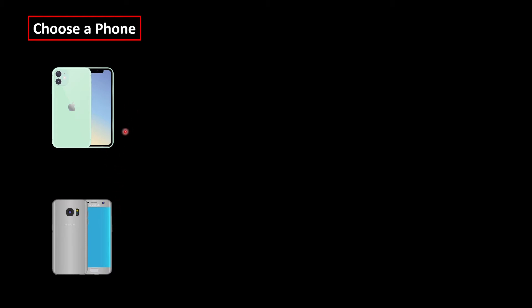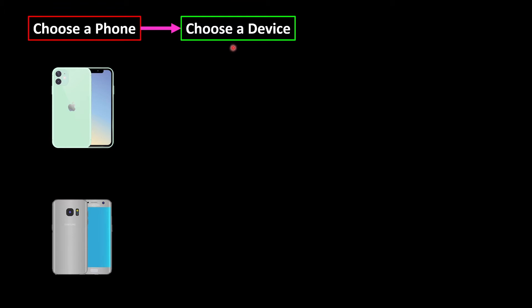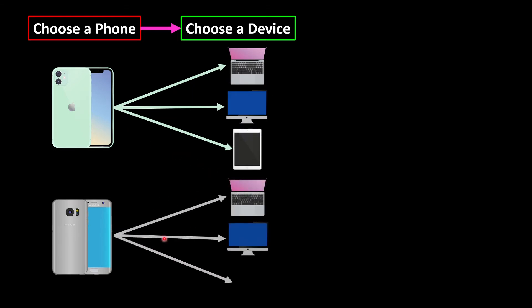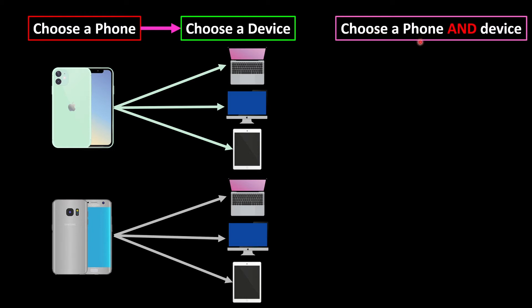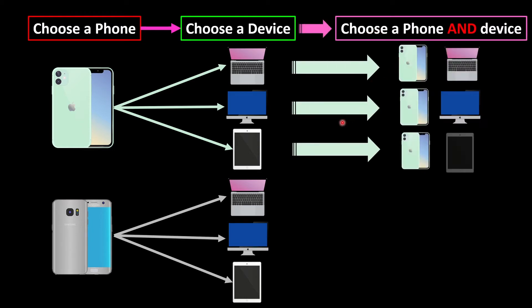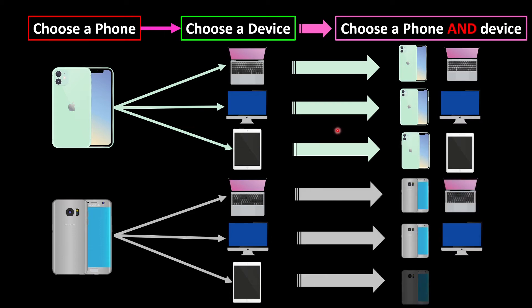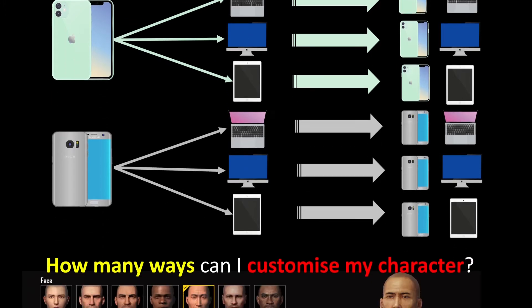Let me convince you with a graphical tree diagram. First, we choose a phone — we have two choices. After choosing the phone, we choose a device. You can see all the possible pairings laid out. It's very clear that there are six ways, which proves that the multiplication rule is working correctly.